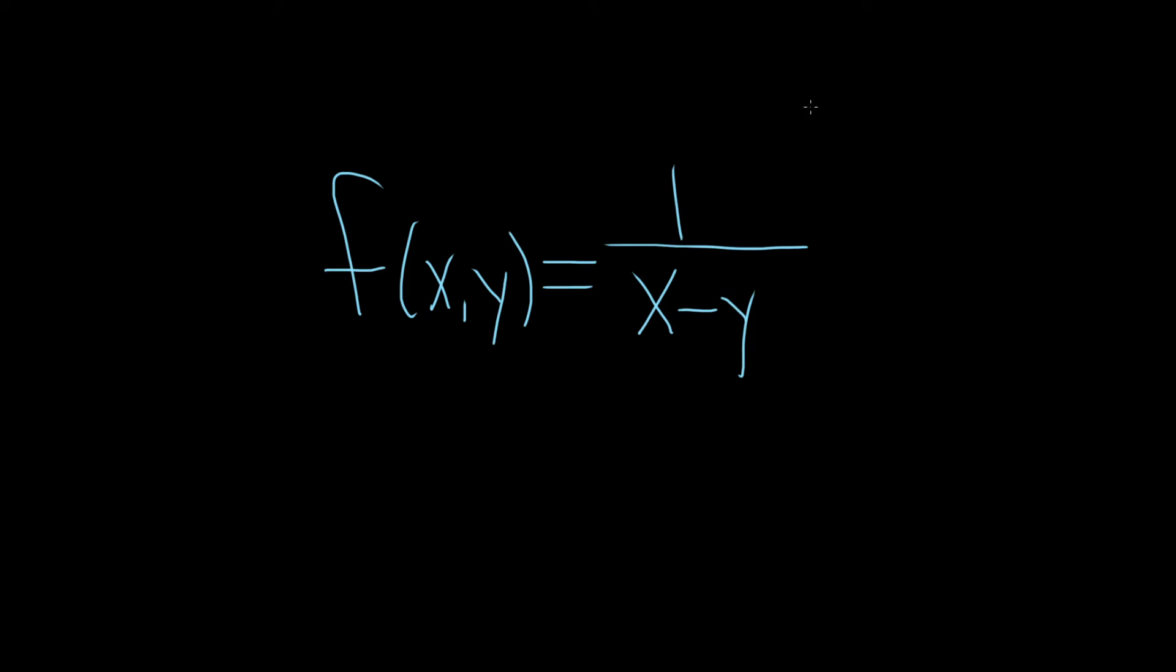It's a set of all ordered pairs that will make sense here. So this fraction will always make sense unless the bottom is equal to 0. And the only way the bottom is going to be equal to 0 is if x is equal to y. That's the only time we're going to get a problem.